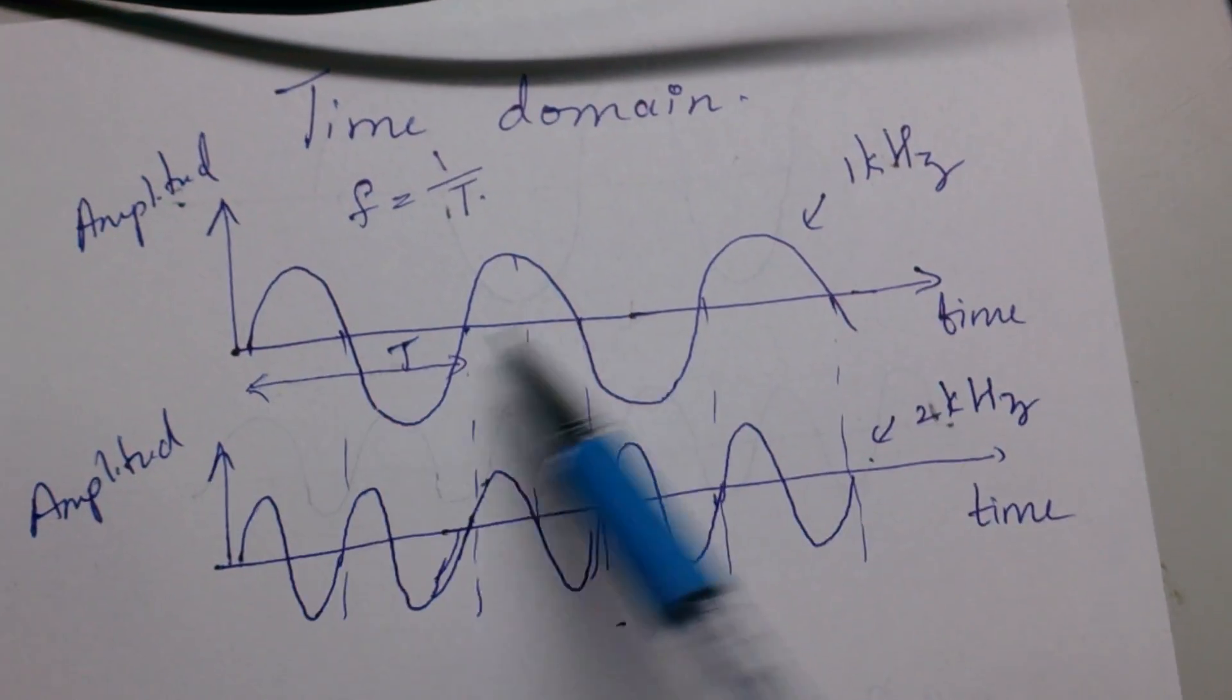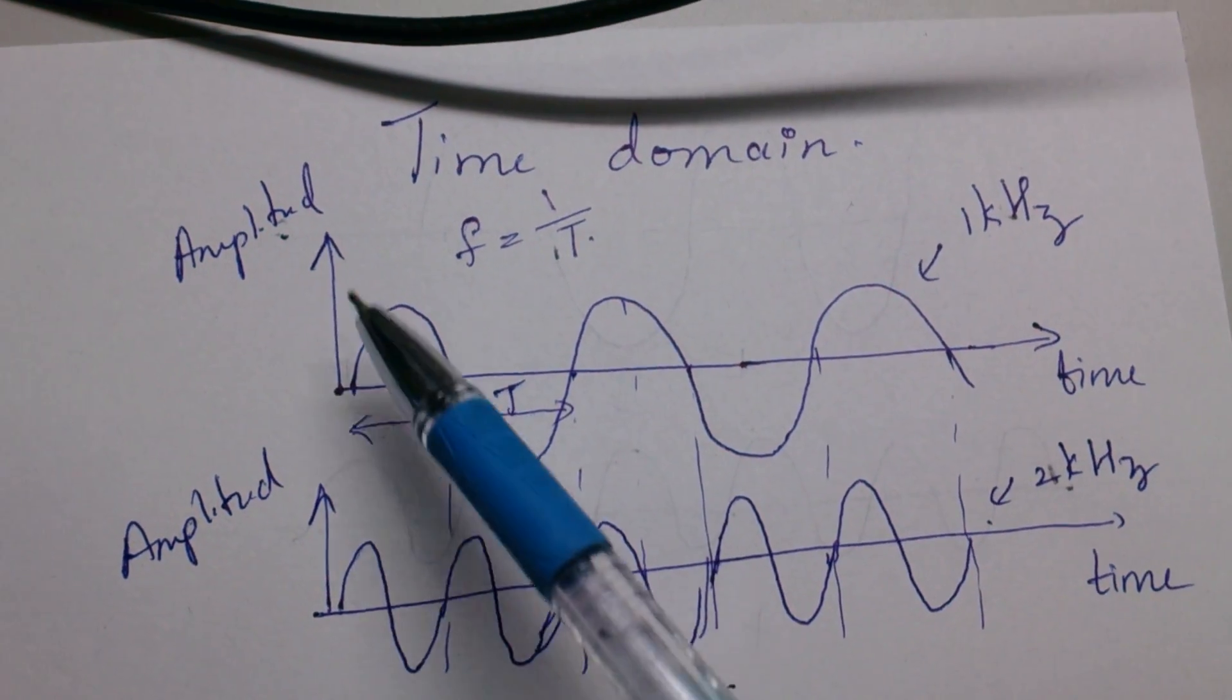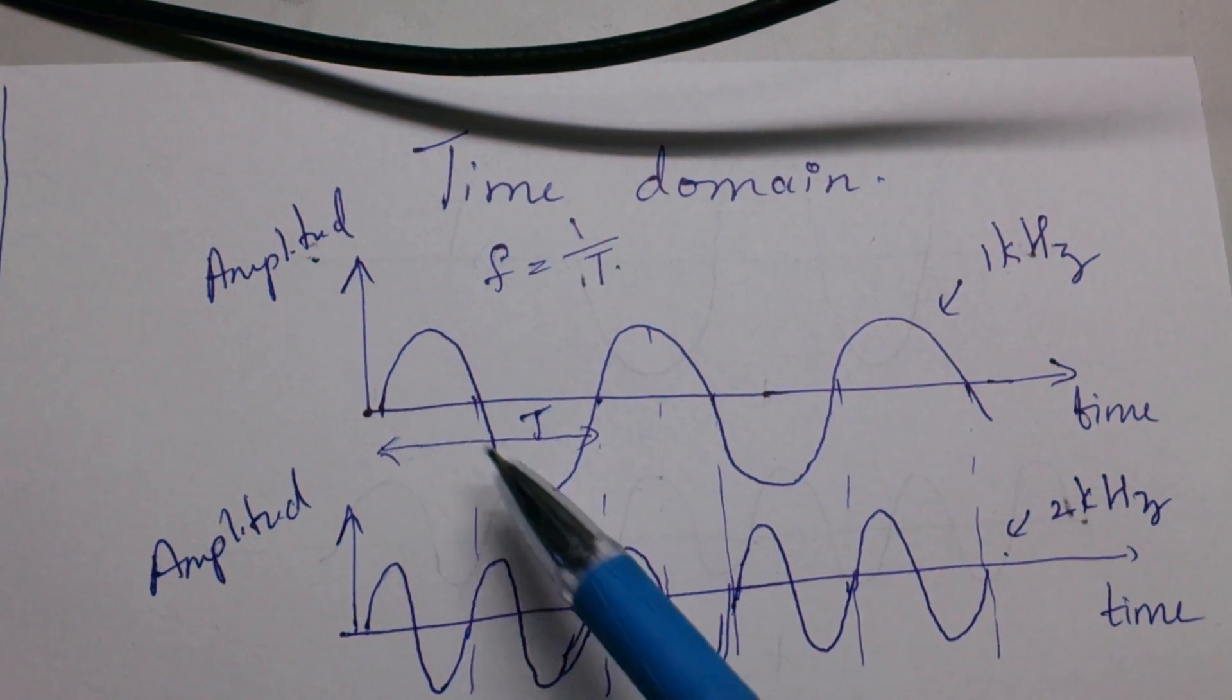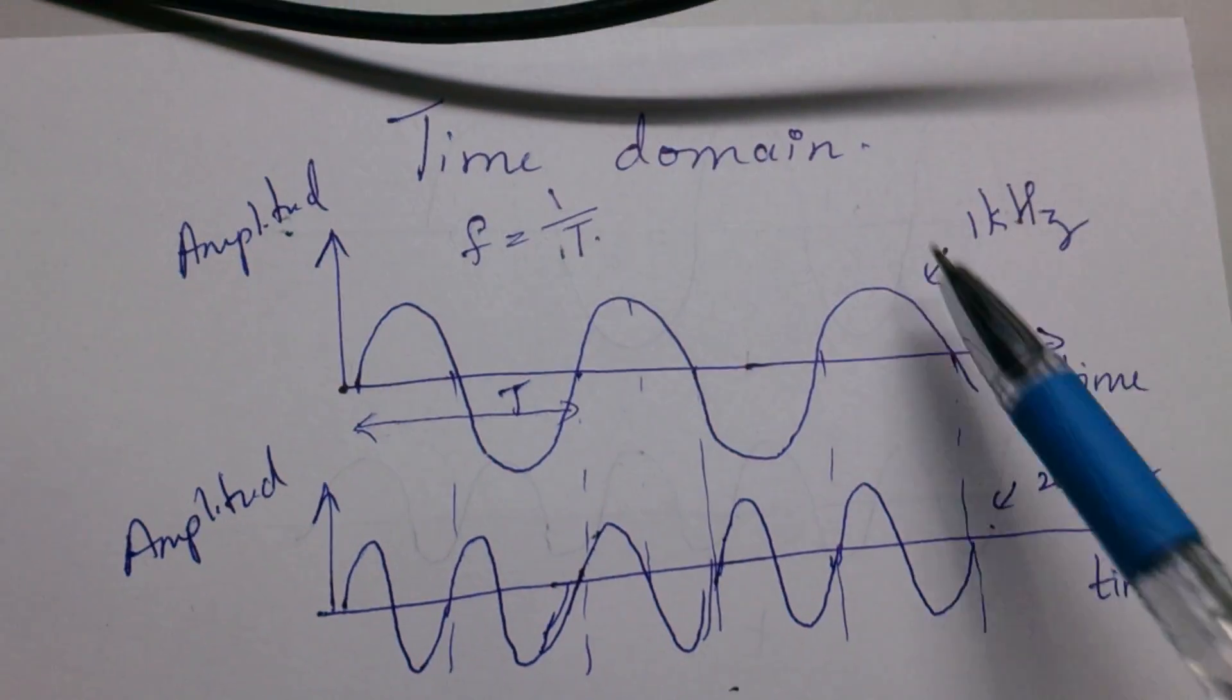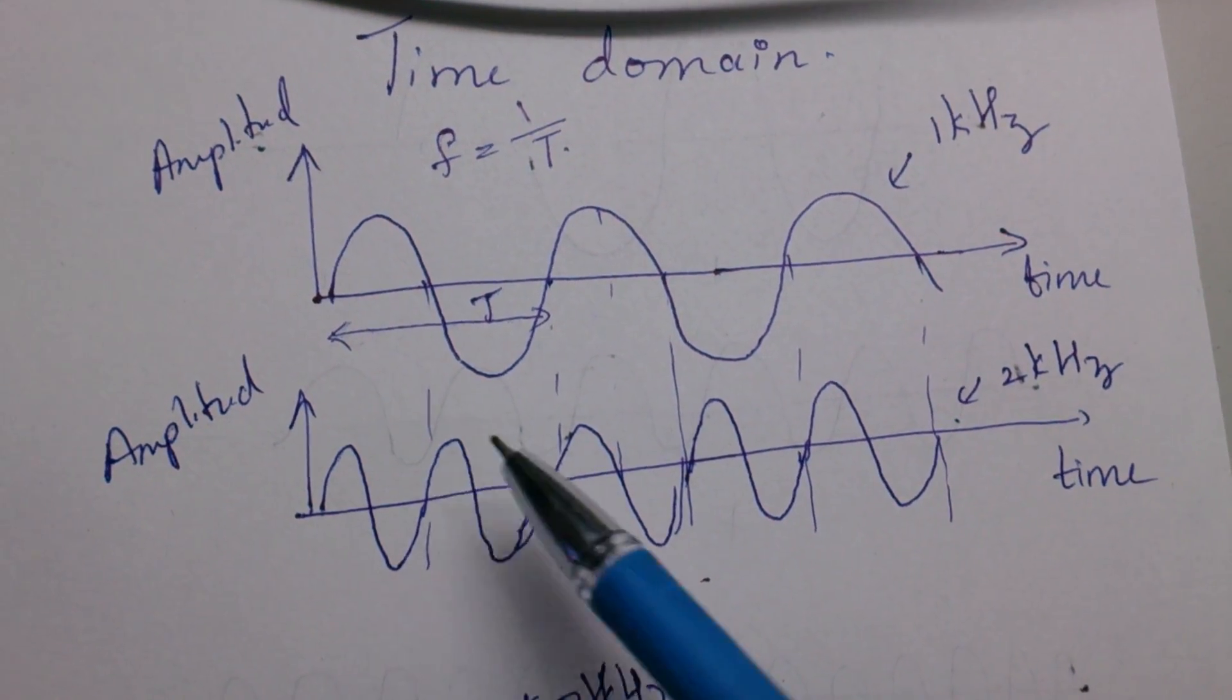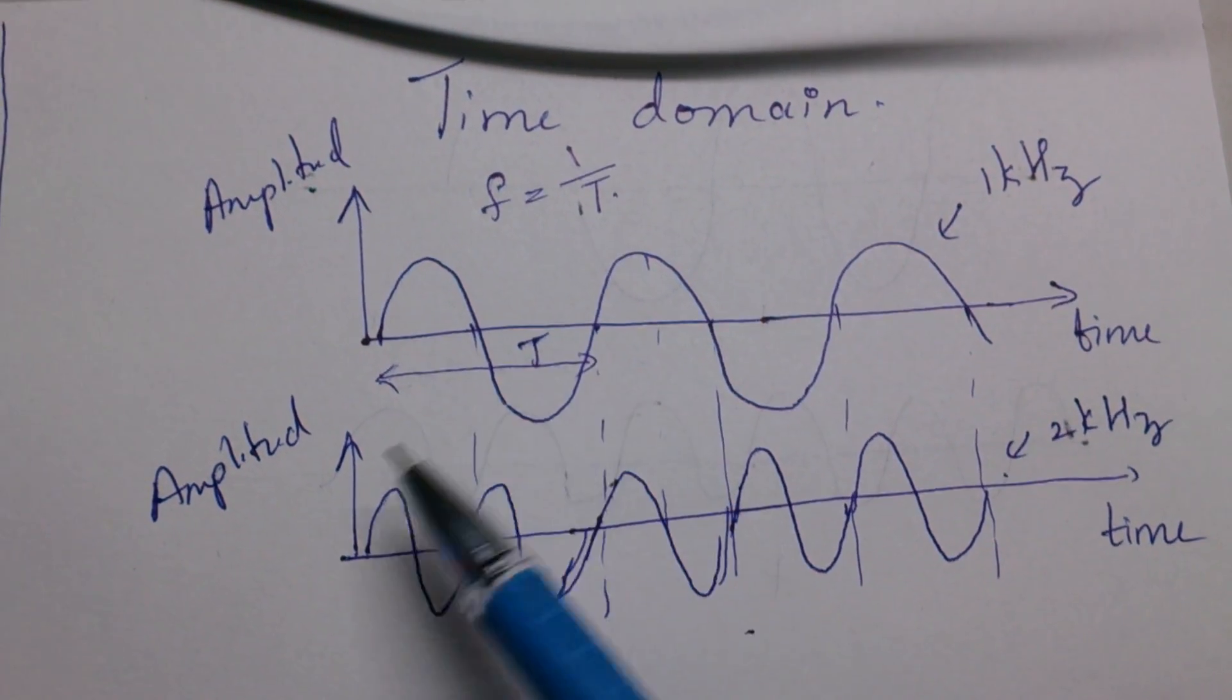Assume this is a 1 kilohertz signal, that means it's oscillating 1 kilo times every second. If it's 2 kilohertz, if I take the scale of 1 kilo then I will be having two cycles in this interval.